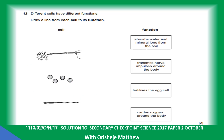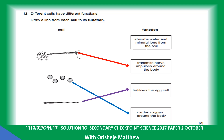Question 12. Different cells have different functions. Draw a line from each cell to its function. Nerve cells transmit nerve impulses around the body. Red blood cells carry oxygen around the body. Sperm cells fertilize the egg cell. The cell that absorbs water and minerals from the ground is a root hair cell, but it is not listed here.